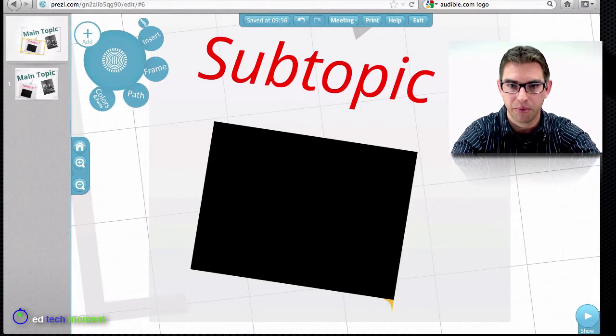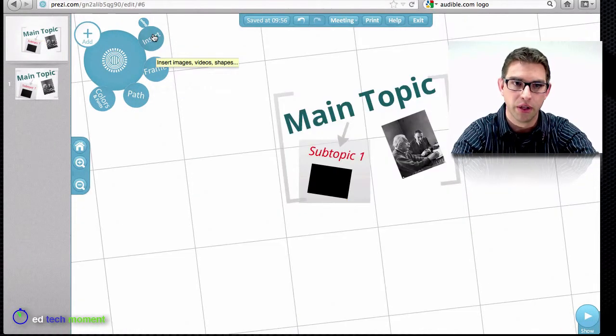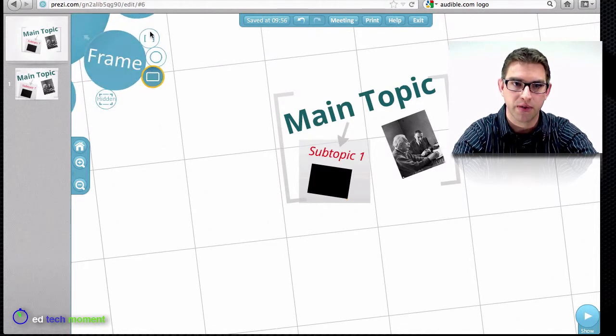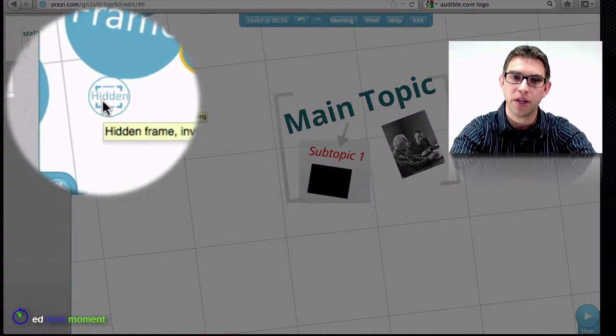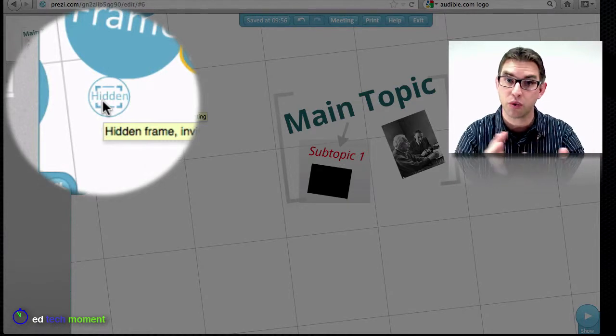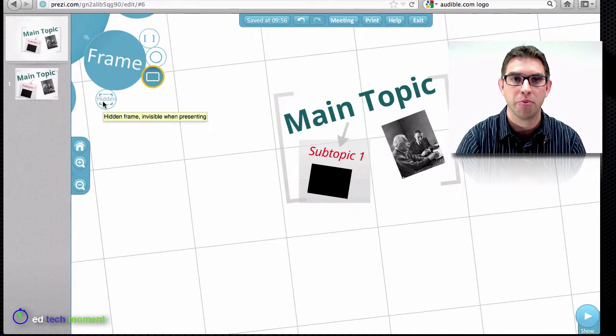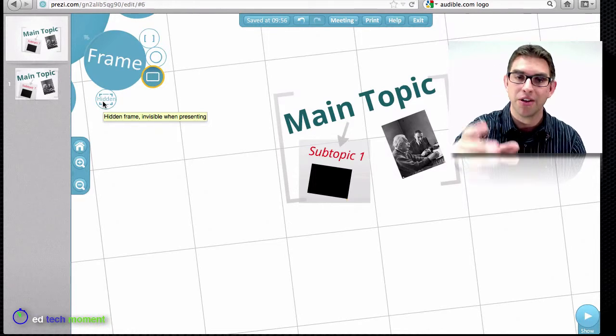Let me hit escape to get back out of my presentation view. We looked at the insert menu, all the different things that we can insert. We looked at the frames and there's different kinds of frames - circle frames, bracket frames, square frames, and then also this hidden frame. If you don't want to see that things are grouped together but you just want to be able to zoom to them, then you can use a hidden frame. You know it's there but your viewers that are seeing the presentation don't have to see that there's a frame there.